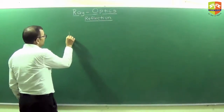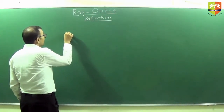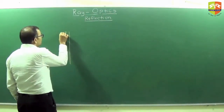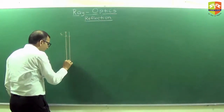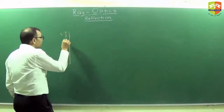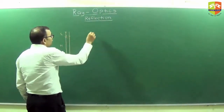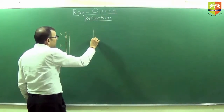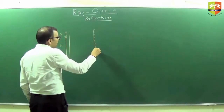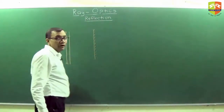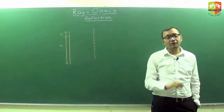Suppose there is a person whose head-to-eye distance is small h and eye-to-feet distance is capital H. You need to find the minimum size of the mirror so that this person can see himself completely.